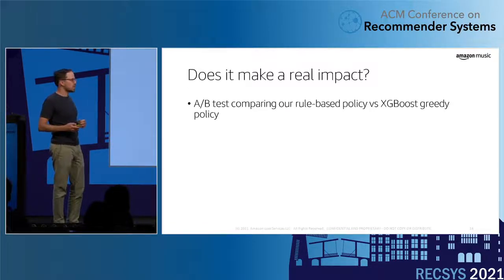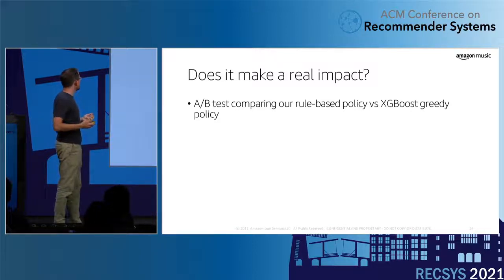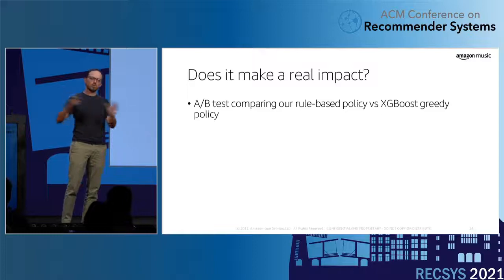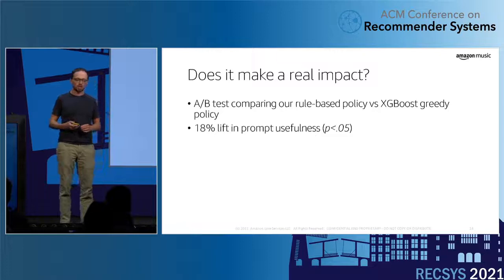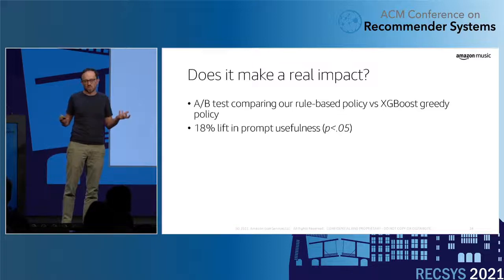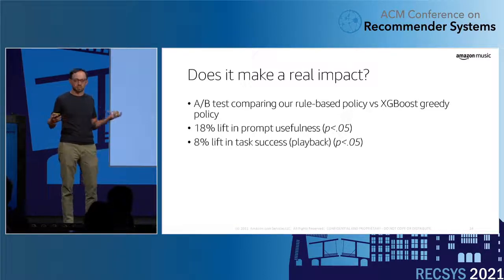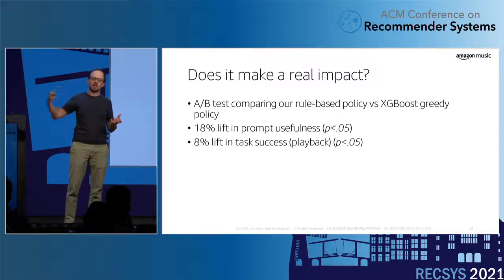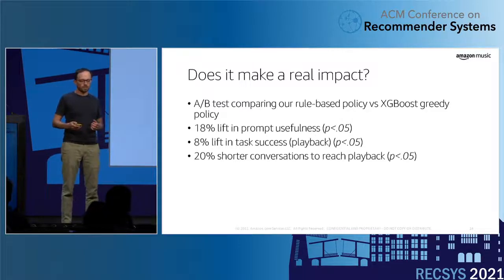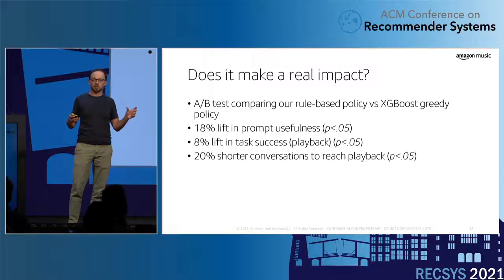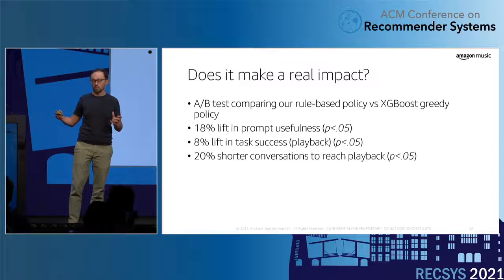We then wanted to check whether this made a real impact with live users, so we did an A/B test comparing the rules with the XGBoost policy. We found an 18% lift in prompt usefulness, which was expected since that's the metric we optimized against. We also found an 8% lift in task success — the number of conversations that end with playback. Interestingly, for conversations that led to playback, those conversations were about 20% shorter. That was a great finding: users got to what they wanted more often, but also more quickly.